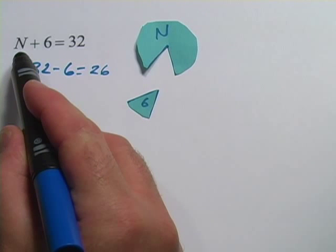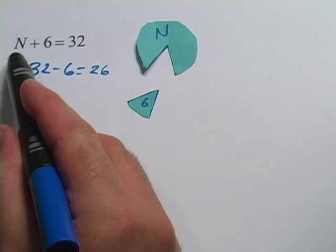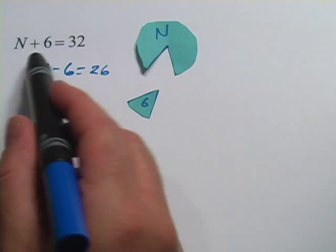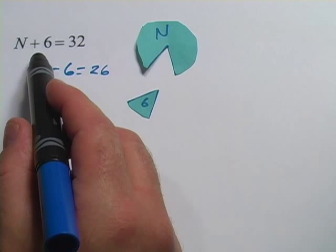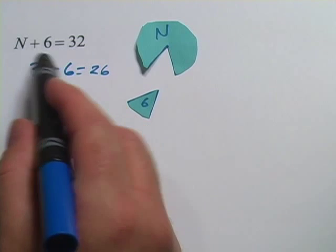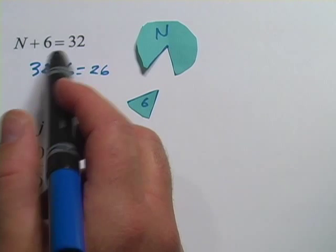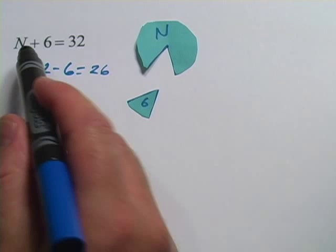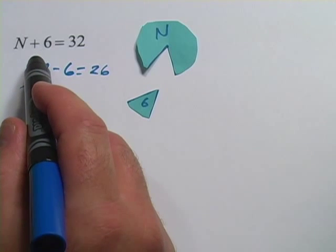And what you want to do when you solve for a letter, we call it a variable, is you want to get rid of any other numbers on that side of the equal sign and get all the numbers over here. The way we do that is we just do the opposite of whatever is happening over here.